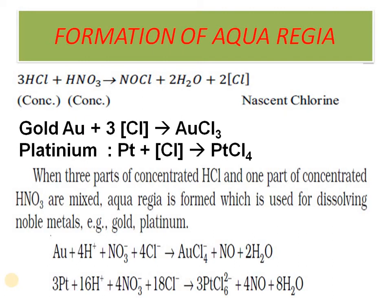This property is used in aqua regia formation. Aqua regia consists of three moles of concentrated HCl and one mole of concentrated nitric acid. When combined, it produces nitrosyl chloride, water, and nascent chlorine. This nascent chlorine reacts with gold and platinum to form AuCl₃ and PtCl₄.